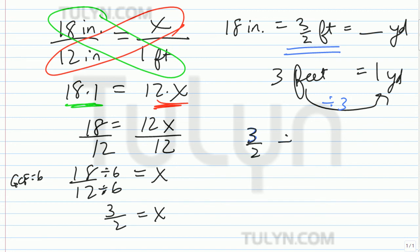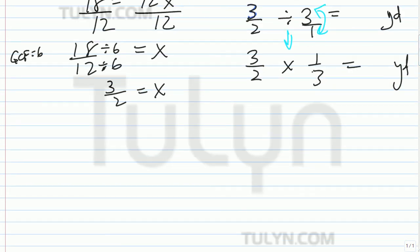3 halves divided by 3 equals how many yards? So 3 halves, this becomes multiplication. And this becomes over 1, and you just do the reciprocal. And that'll become 1 third. That'll tell you how many yards. And 3 halves times 1 over 3, they have something similar in the top and the bottom. So you're just going to divide by 3. That's going to be 1 and 1. 1 times 1 is 1. 2 times 1 is 2. And that's how many yards it's going to be.